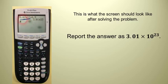Okay, that's how your calculator displays it. And when you get the answer, you have this 3.01e23. That's your calculator's way of saying 3.01 times 10 to the 23rd.